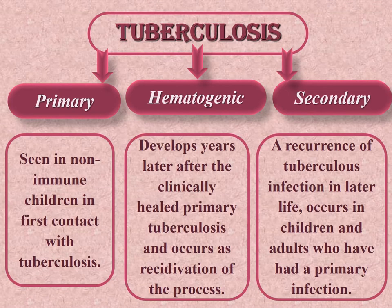According to pathogenetic, clinical and morphological peculiarities, there are three forms of tuberculosis. Primary tuberculosis is seen in non-immune children on first contact with tuberculosis. Hematogenic tuberculosis develops years after the clinically healed primary tuberculosis and occurs as recidivation of the process. Secondary tuberculosis is a recurrence of tuberculosis infection occurring in children and adults who have had a primary infection.